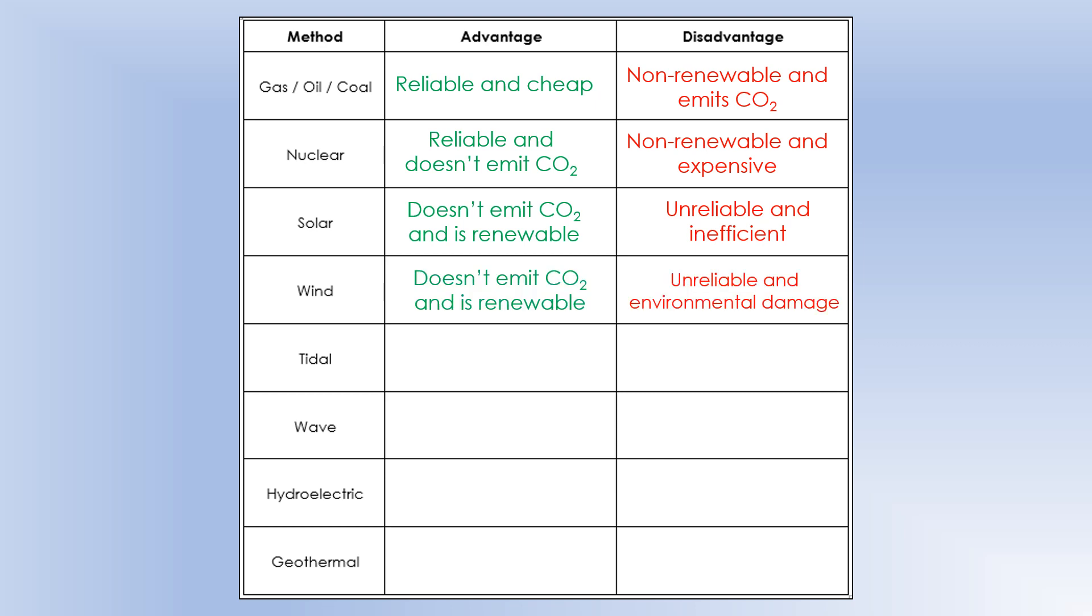Wind power doesn't emit CO2. It's renewable, like, wind is always being produced. It's unreliable, because you never know how windy it's going to be, particularly accurately. And you can also consider the environmental damage of them, especially to birds and things like that.